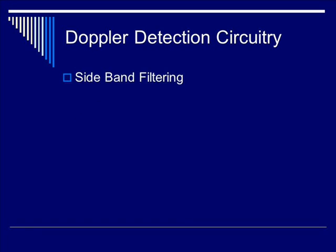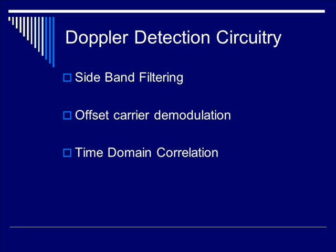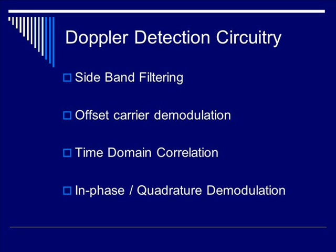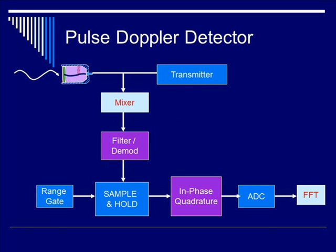Let's talk about the Doppler detection circuitry. Over the years there have been multiple implementations, such as sideband filtering, offset carrier demodulation, time domain correlation, and finally in-phase quadrature demodulation. For all practical purposes, you just need to know about in-phase quadrature demodulation, because that's what's used today. The pulse Doppler detector circuitry is similar to the continuous wave circuitry, with the exception of a sample-and-hold, quadrature, and the FFT.